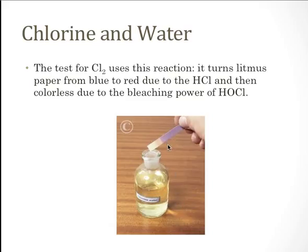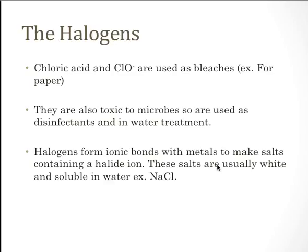We can use this reaction to test for chlorine: it will turn litmus paper from blue to red due to the hydrochloric acid, and then the paper goes colorless due to the bleaching power of HOCl. Chloric acid and ClO⁻ are used as bleaches, for example in paper production. They are also toxic to microbes and are used as disinfectants and in water treatment. Halogens form ionic bonds with metals to make salts containing a halide ion — these are usually white and soluble in water, for example sodium chloride.